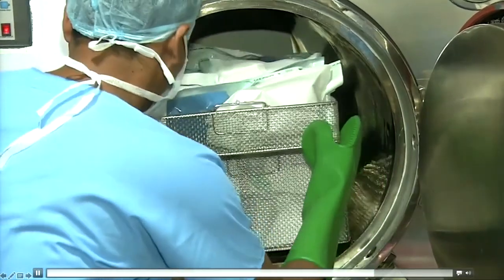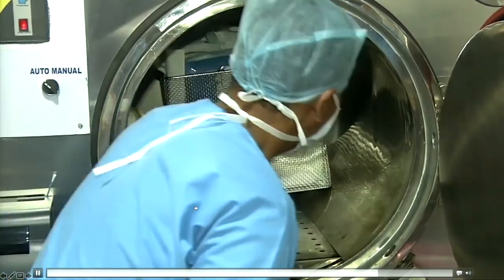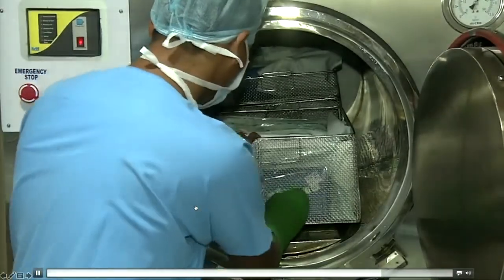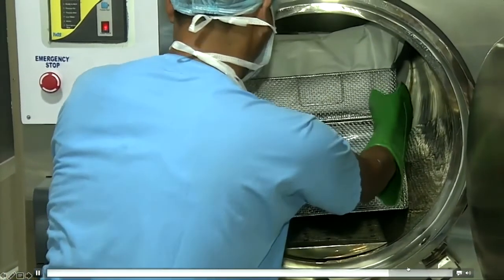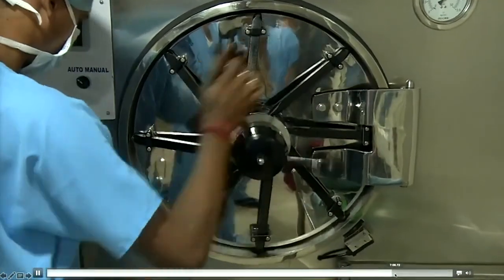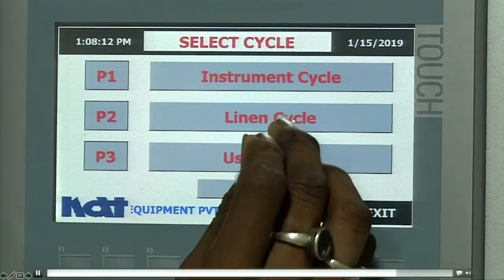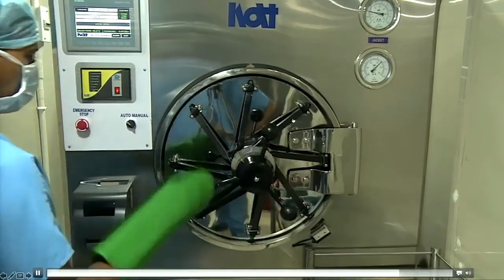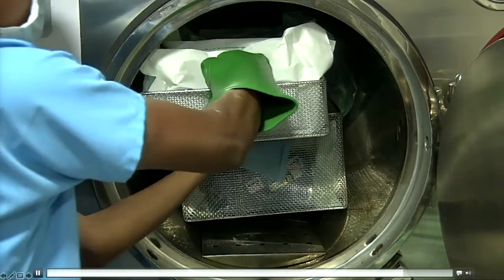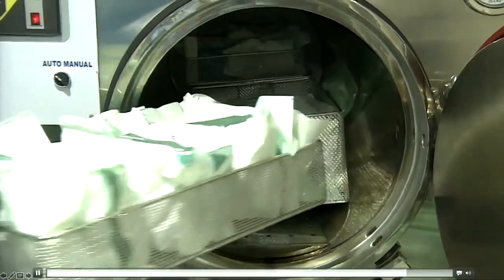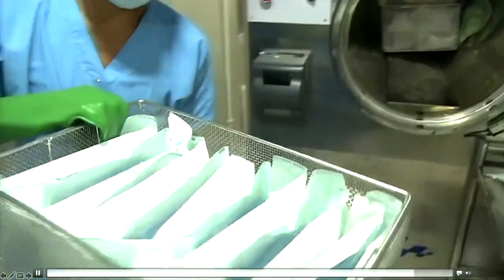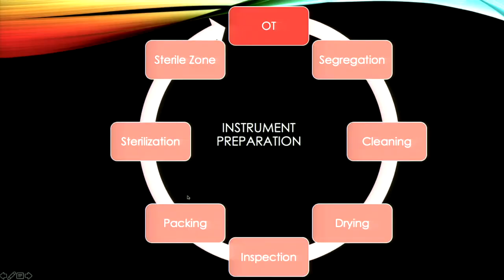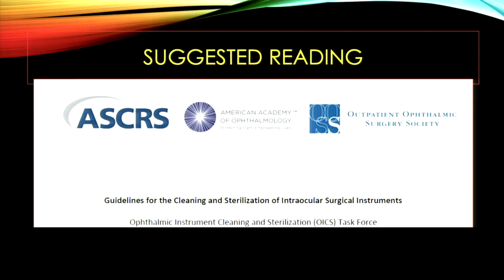Flash sterilization is used when there are limited instruments in a high-volume setup — sterilization time is around 4-5 minutes. Ideally flash sterilizers are not recommended because the instrument remains wet and prone to infection. If using a flash sterilizer, the instrument should be used the same day and not stored — use within a maximum of 3 to 4 hours. The OIC task force guideline is a good resource for how instrument cleaning should be done.